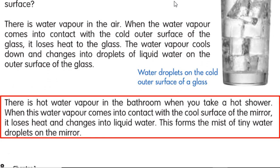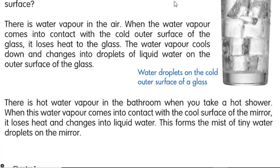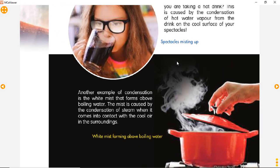There is hot water vapor in the bathroom when you take a hot shower. When this water vapor comes into contact with the cool surface of the mirror, it loses heat and changes into liquid water. This forms the mist of tiny water droplets on the mirror — ini membentuk kabut dari butiran-butiran air kecil yang ada di kaca.